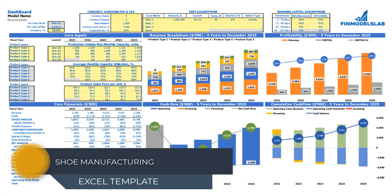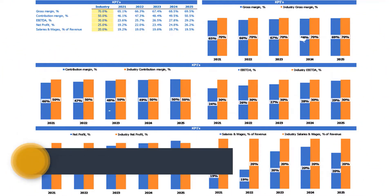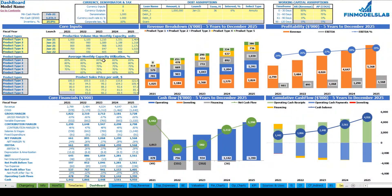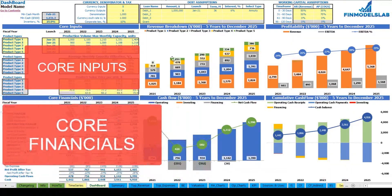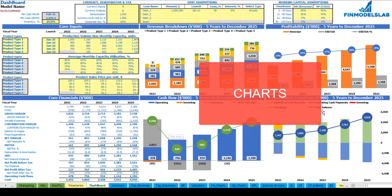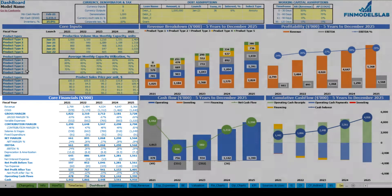Hello, in this video I'm going to walk you through the financial model Excel template. I will show you the main inputs, the core outputs, reports, and charts. On the dashboard you can set up your core inputs or drivers for the model, review the core charts such as revenue breakdown, profitability, cash flow and cumulative cash flow, and also review the core financials — a summary of your financials by years.